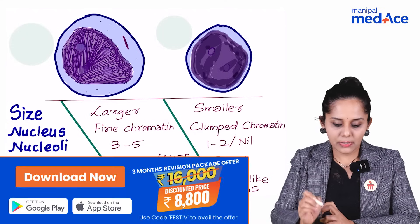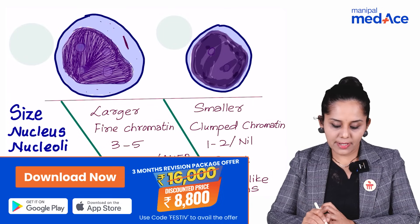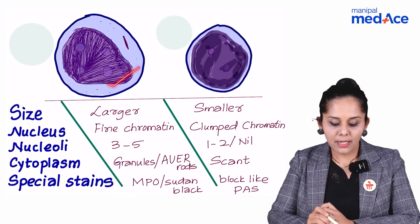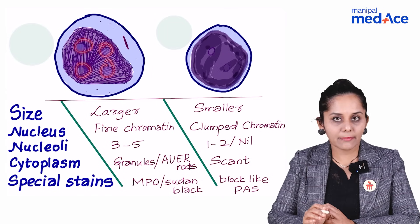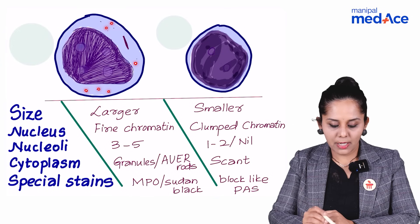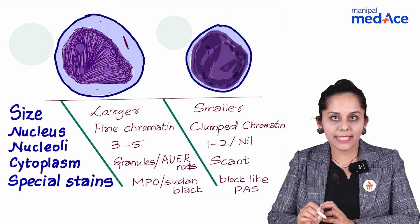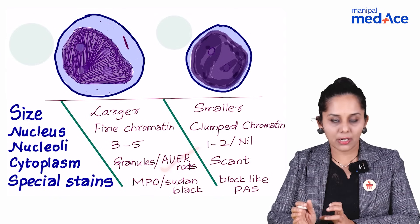The first cell we are talking about is larger in size, which has fine chromatin and three to four prominent nucleoli. The cell has four prominent nucleoli, some cytoplasmic granules, and also has prominent rod-like cytoplasmic structures, which are nothing but Auer rods.